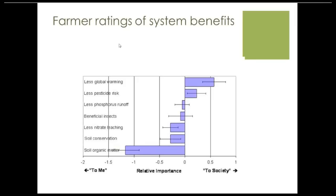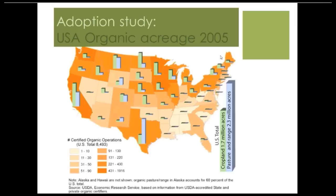Economist Scott Swinton developed an approach to look at ratings from farmers, acknowledging the fact that something might be really important to a farmer — like building soil organic matter — but something like mitigating global warming might be perceived by farmers as more important to society. There are ways to compare different properties of a system, and I think it's good to keep exploring these so that we can do more than just look at yields or profitability, which can vary from year to year.